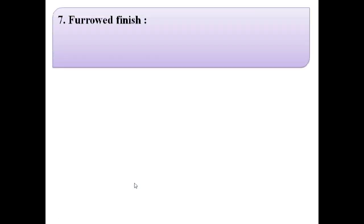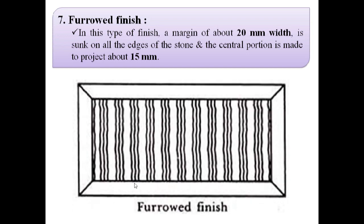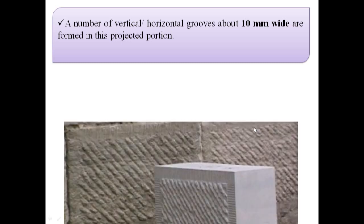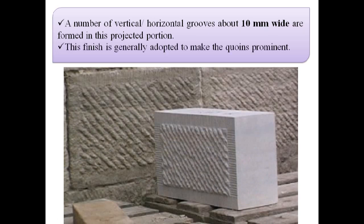The next finish is furrowed finish. In this type of finish, a margin of about 20 mm width is sunk on all the edges of the stone and the central portion is made to project about 15 mm. A number of vertical or horizontal grooves about 10 mm wide are formed in the furrowed projected portion. This finish is generally adopted to make the coins prominent.